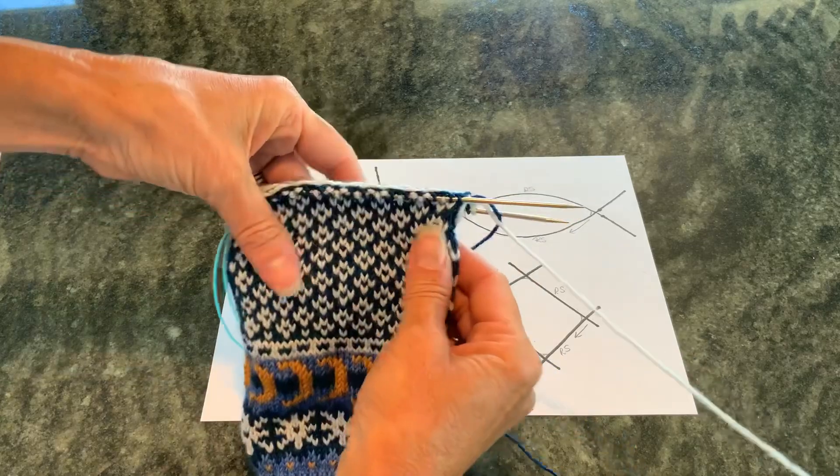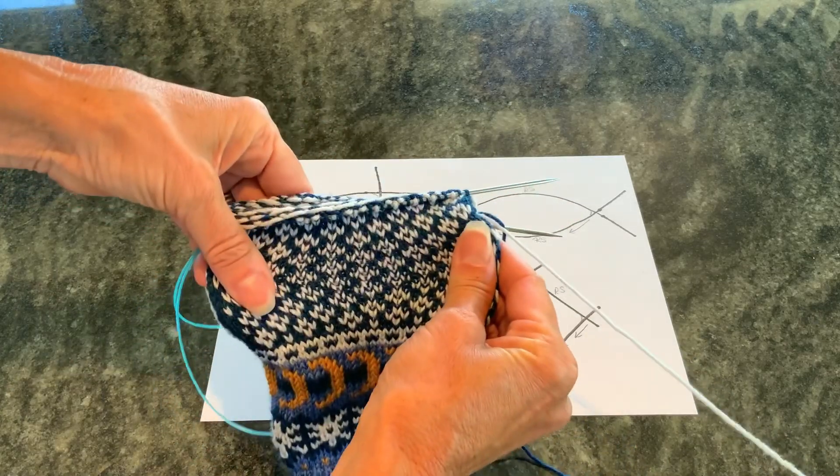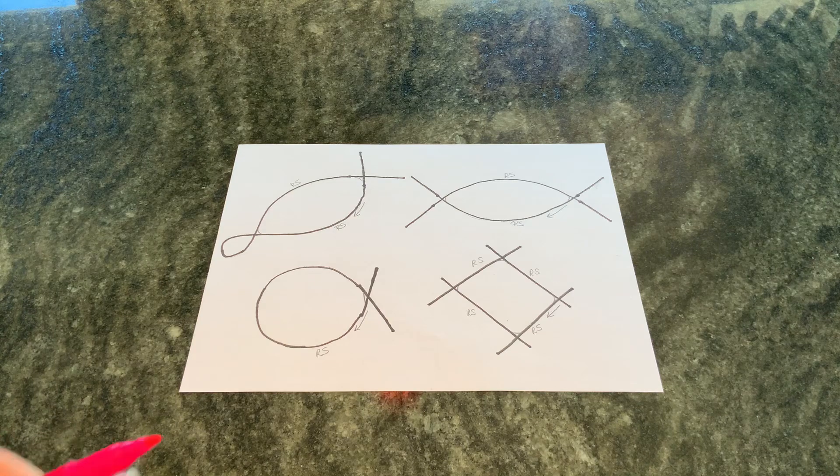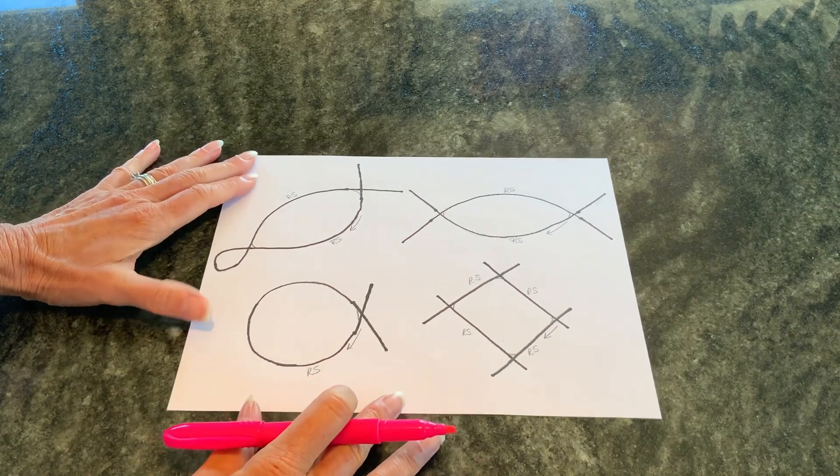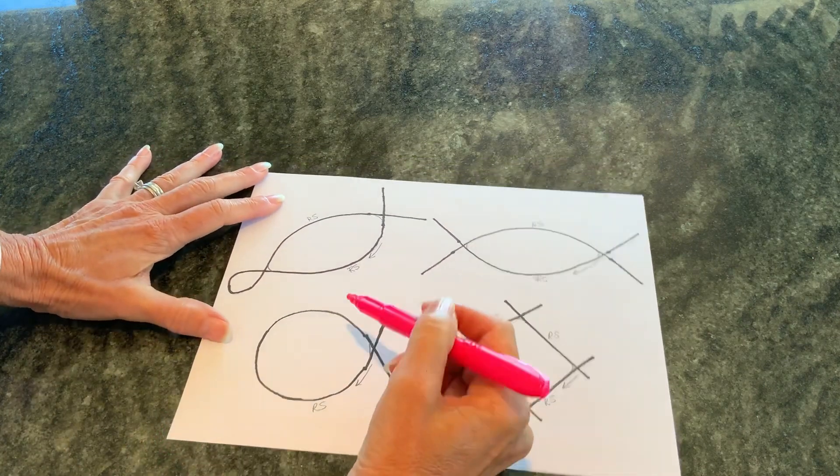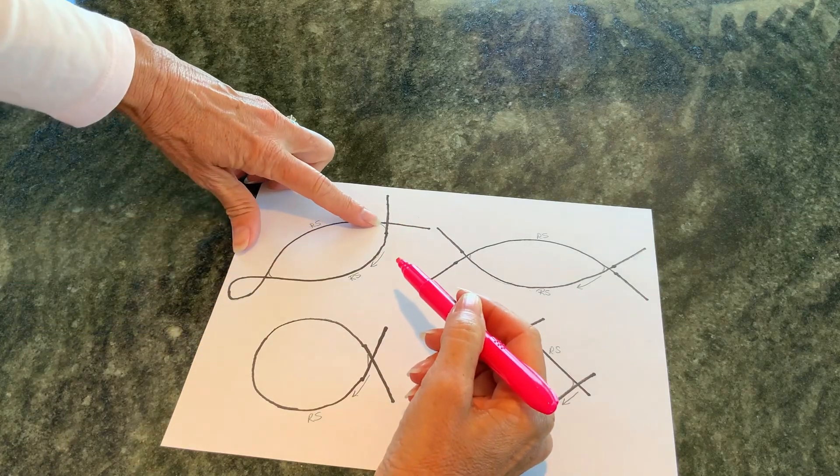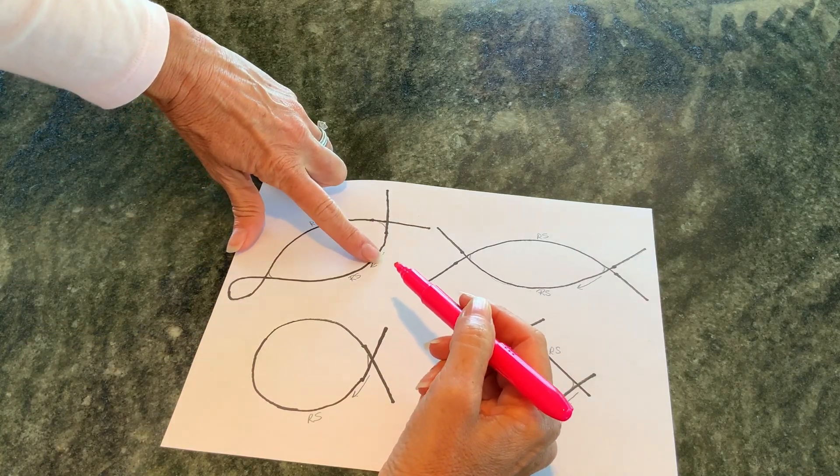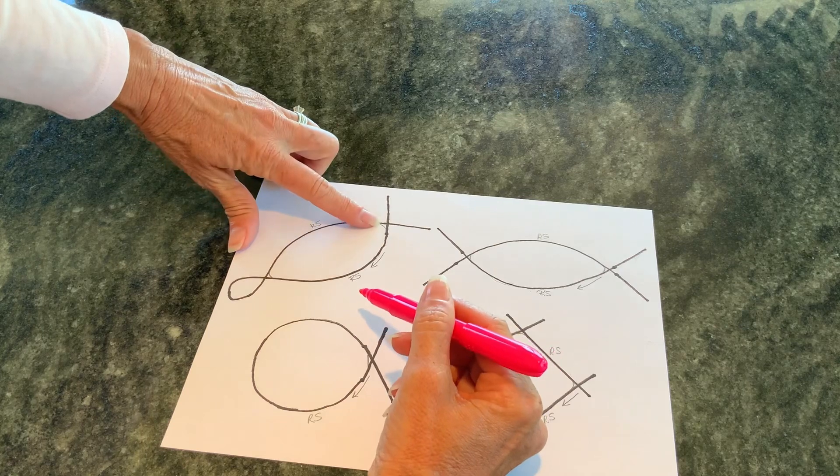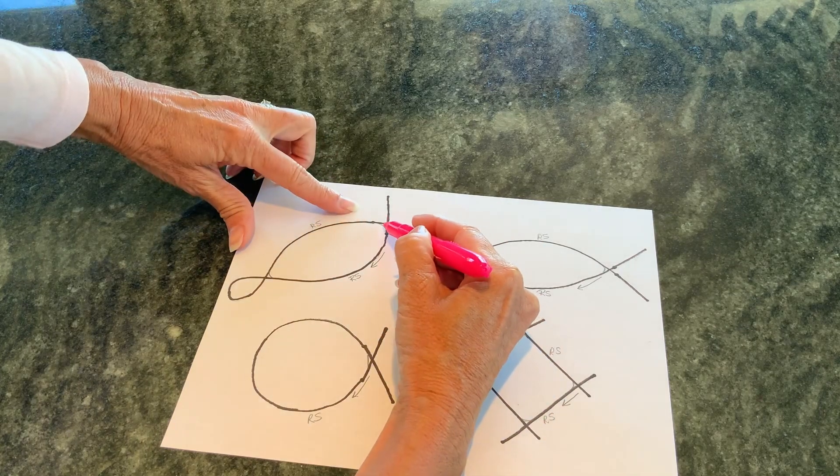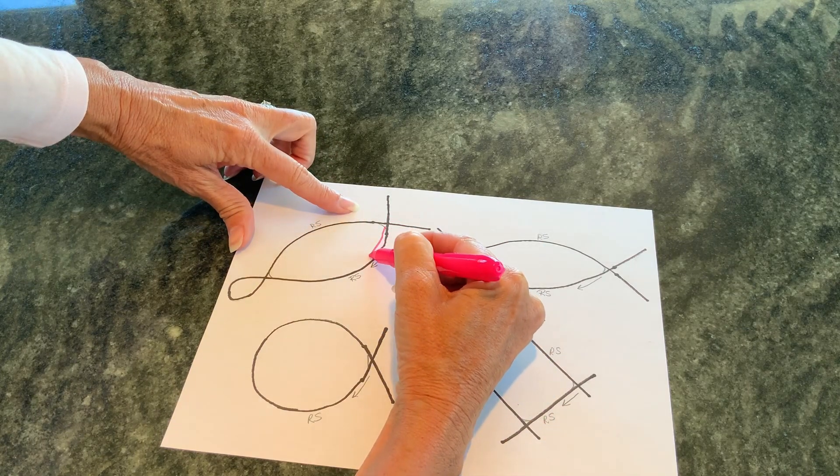You've got two blue stitches right here, and behind those is the light color that's being carried in the back while those two dark stitches are being made. Those are called the floats. Tightness of floats is what causes you to lose stretchiness in the project.